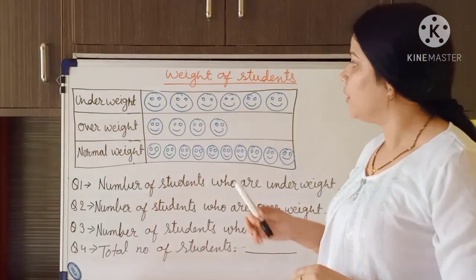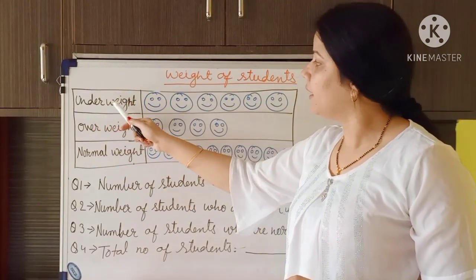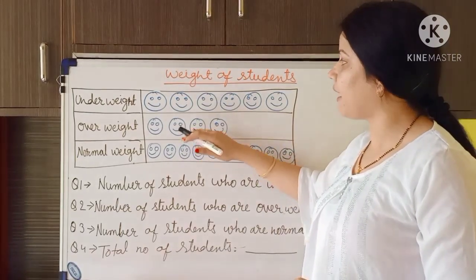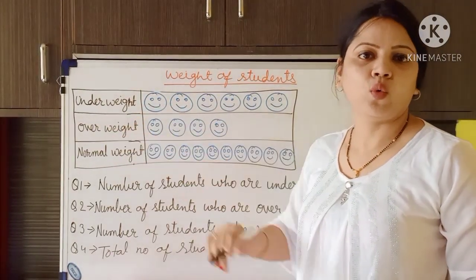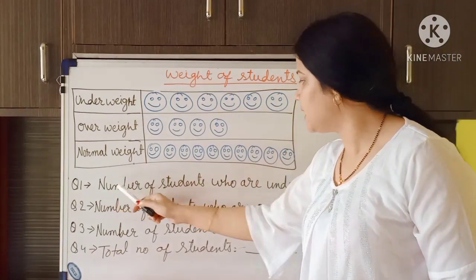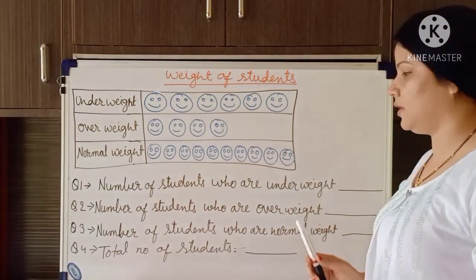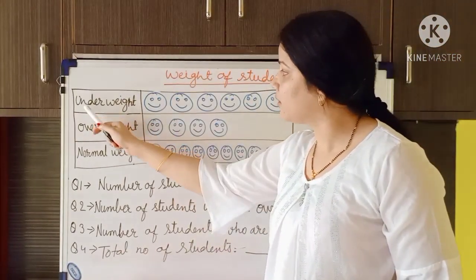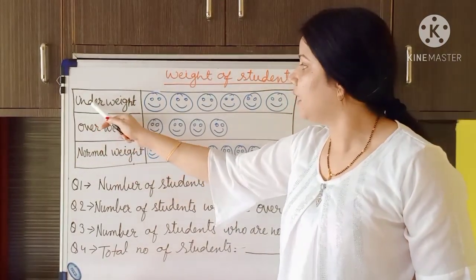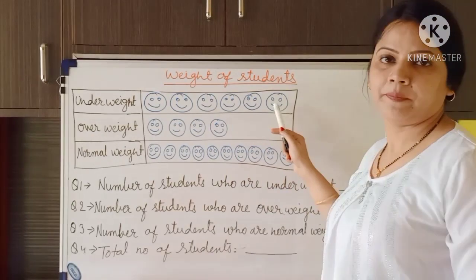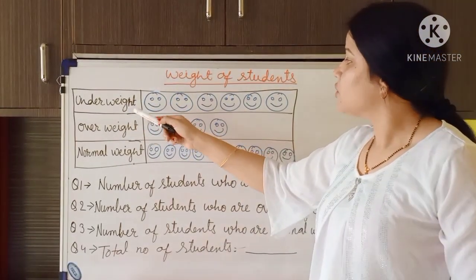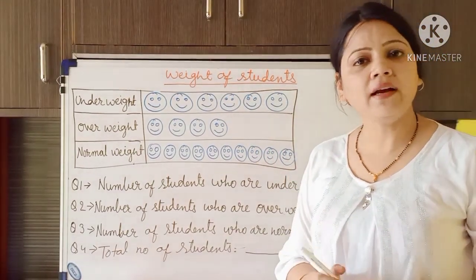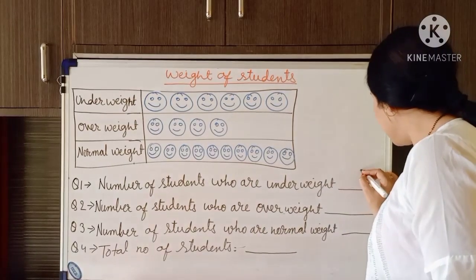In the label, I have written: underweight, overweight, and normal weight. So here we have categorized students according to their weight. The first question is the number of students who are underweight. We check where underweight is written and count: 1, 2, 3, 4, 5, 6 — six students are underweight.